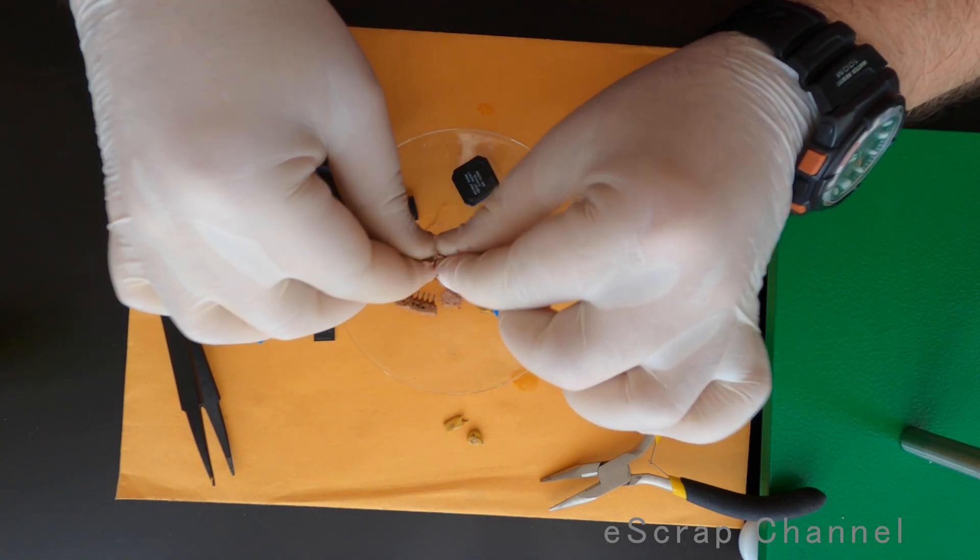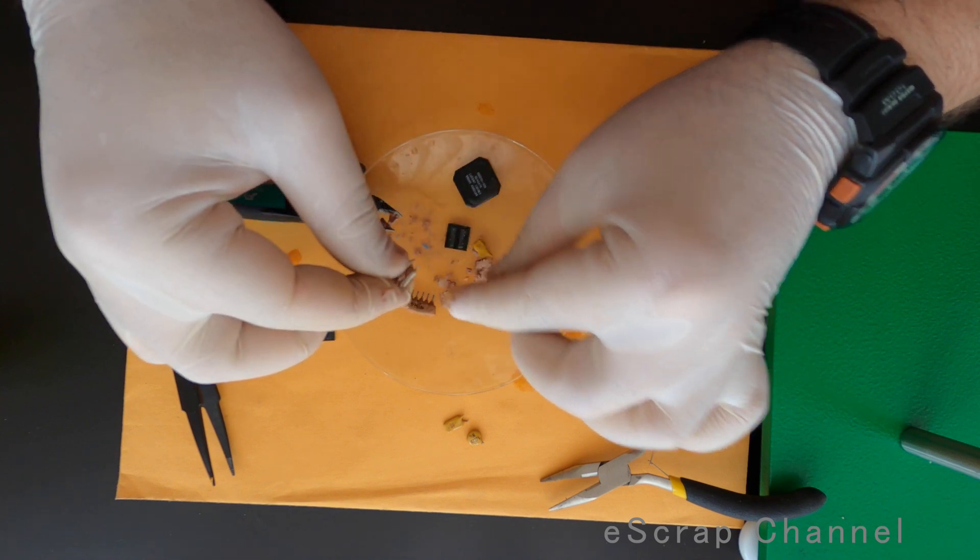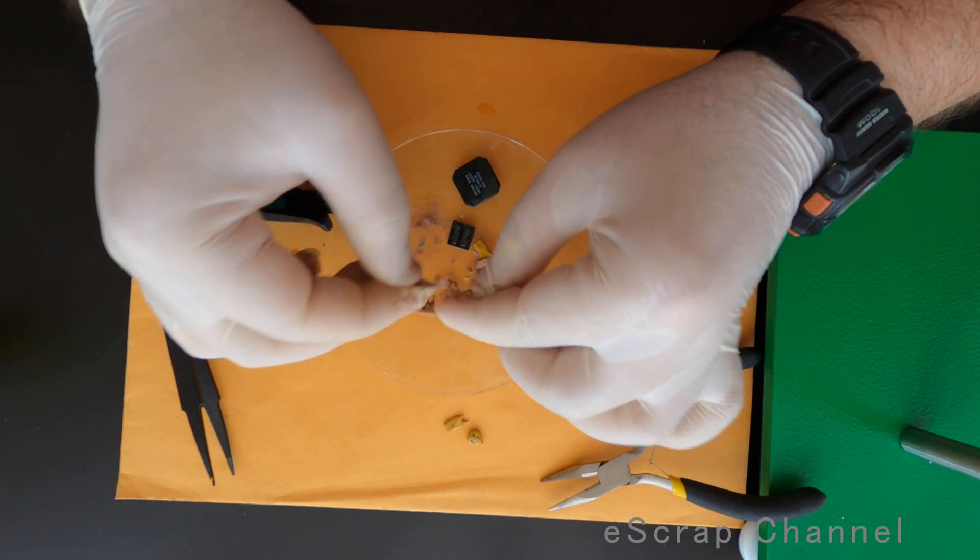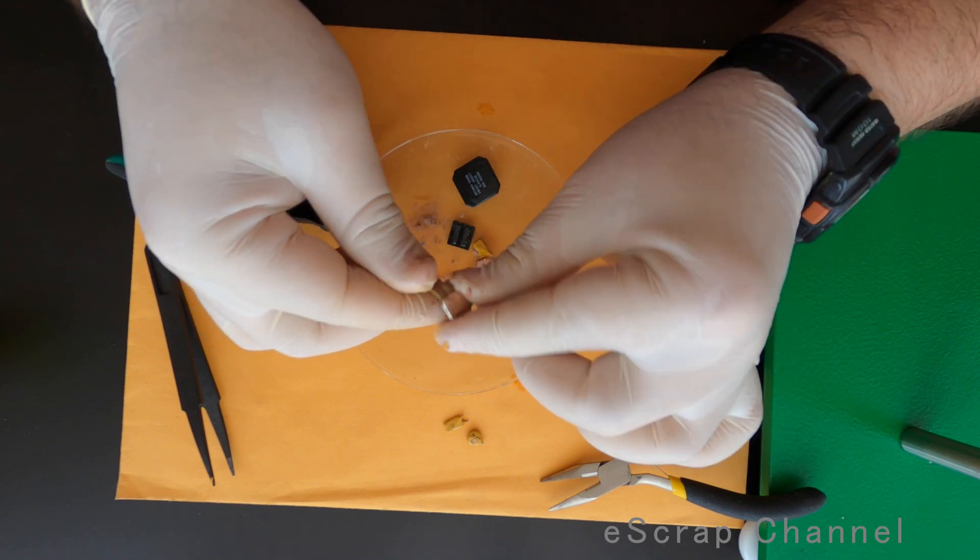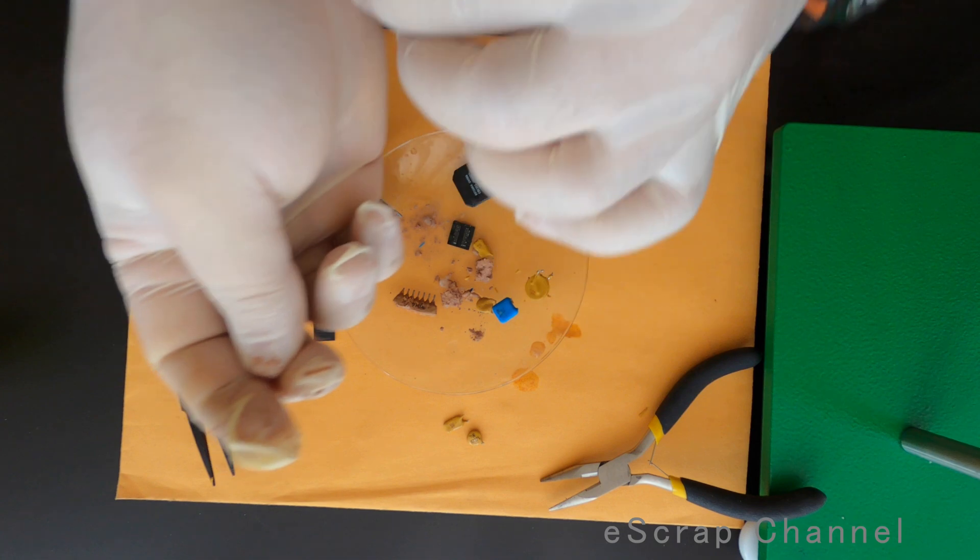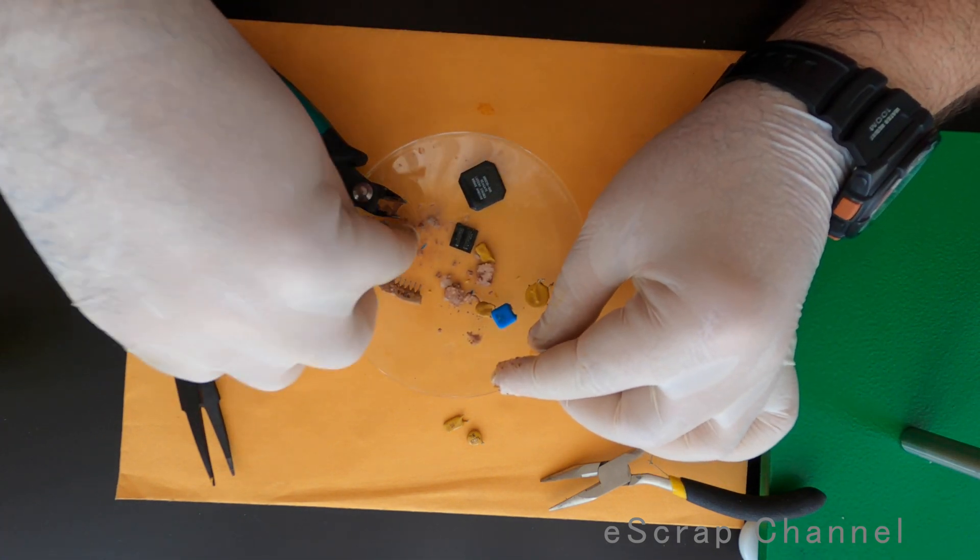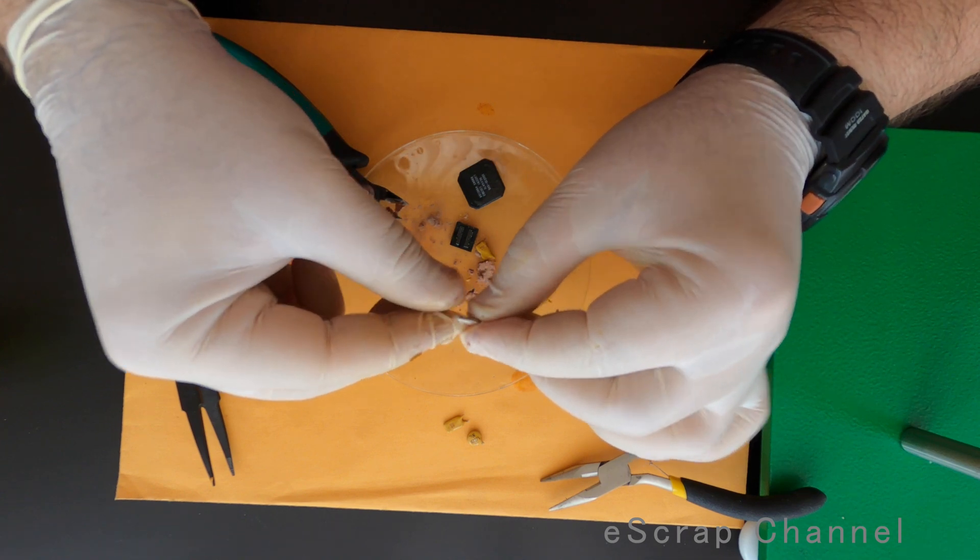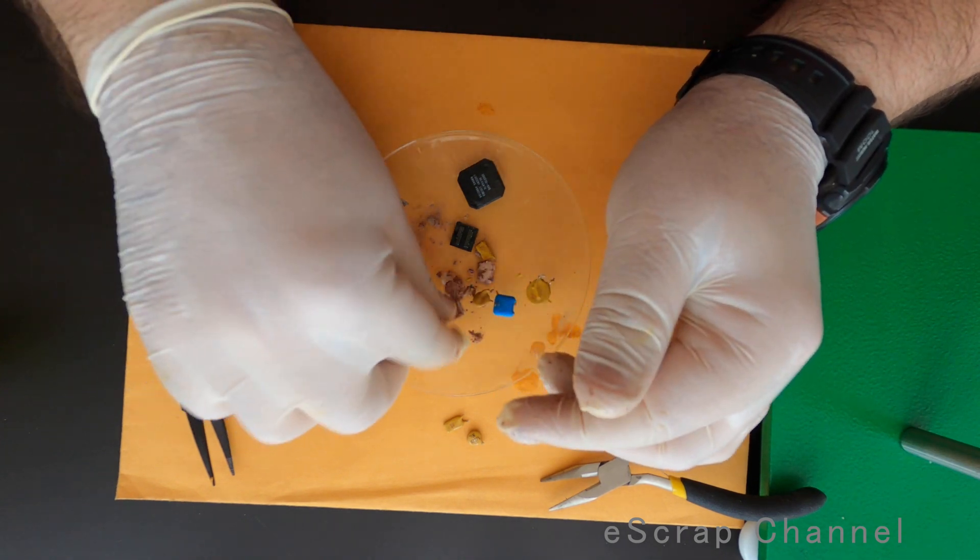Look at this beauty. Do you know what usually people do to remove this protective covering? To remove the protective covering, people burn these capacitors. And look at the size of the MLCC.